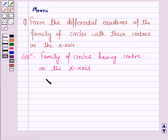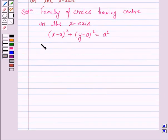is given by (x-a)² + (y-0)² = a². This is how we give the equation of the circle. And here, a is an arbitrary constant.